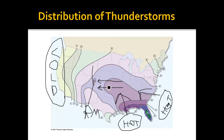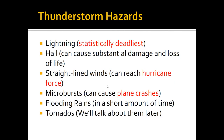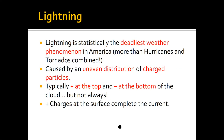What are some of the hazards that thunderstorms can produce? There are six main hazards, and this is one of the reasons thunderstorms are so concerning. The six main hazards are: lightning, hail, straight-line winds, microbursts, flooding rains, and tornadoes. We'll talk about the first five right now and save tornadoes for a couple of lectures. Lightning is statistically the deadliest phenomenon, not just from thunderstorms, but actually in America — even more than hurricanes and tornadoes combined.